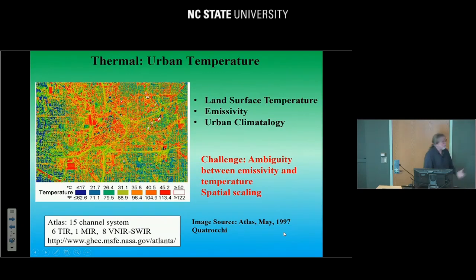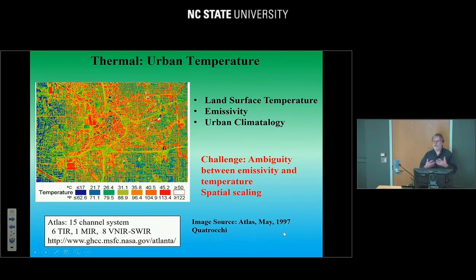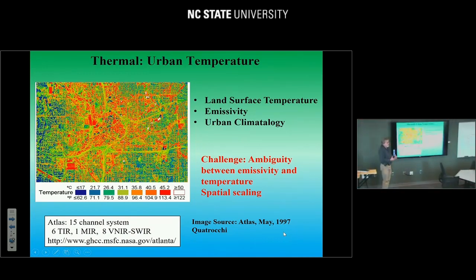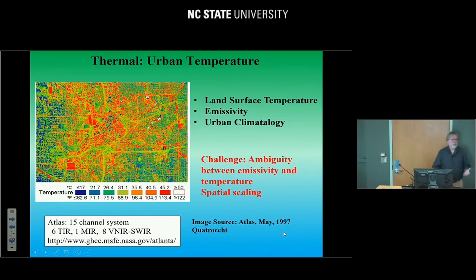In the thermal domain, temperature is really what you're mostly interested in. This work from Dale Quattrochi uses the ATLAS sensor showing the temperature distribution of Atlanta, ranging from very high to low temperatures. When we're interested in the thermal domain, it's things like urban heat island effects. Other things that affect temperature retrieval is emissivity of surfaces, and there's a key challenge: the ambiguity between temperature and emissivity. You can have two objects emit the same amount of energy — one is hot but a poor emitter, the other is cooler but a really good emitter — so you need a tool for temperature-emissivity separation.